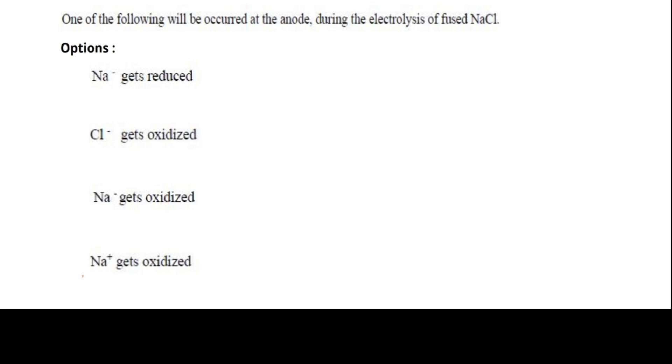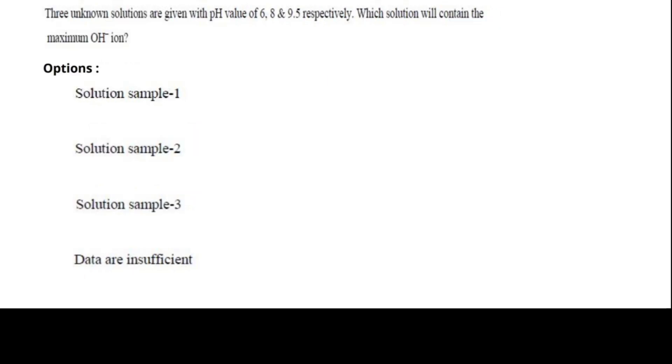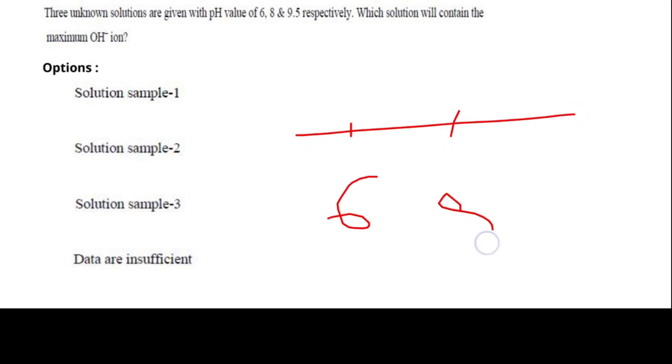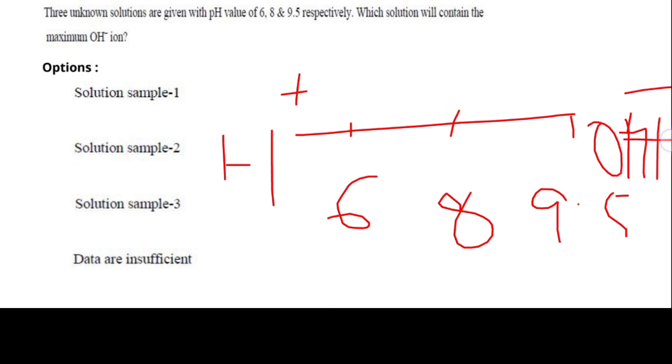Next question: three unknown solutions are given with the pH value of 6, 8, and 9.5 respectively. Which solution will contain the maximum OH- ions? The options were solution sample 1, solution sample 2, solution sample 3, and data are insufficient. Let's form a table here: it has 6, 8, 9.5. In this region it has H+, it has OH-. So the answer is solution sample 3, because 9.5 has more OH- ions.